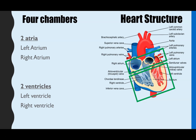You might have noticed on the diagram that this side is labelled as the right and this side as the left, which is the opposite to what it looks like. That's because when we label a picture of the heart, we're imagining the heart is actually on us. If you were to pick up that picture, place it against your heart and look down, that side would be on the left side of your body and that would be on the right. So just bear that in mind.